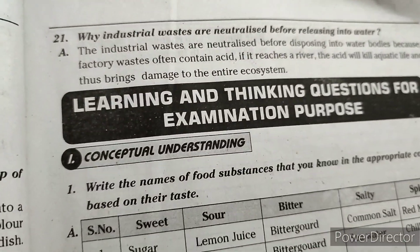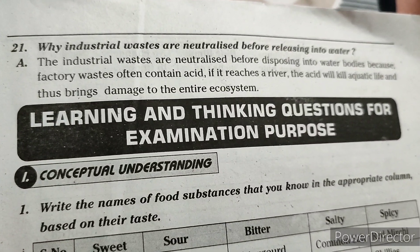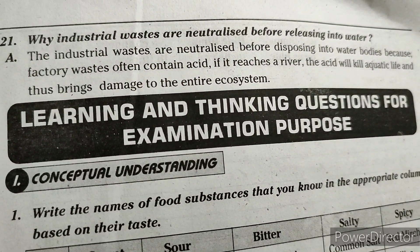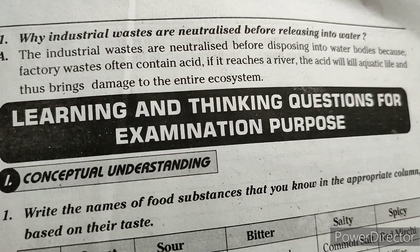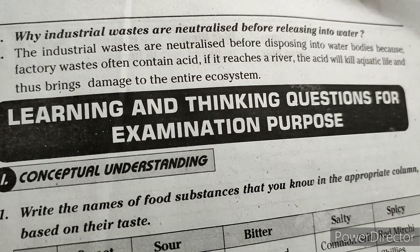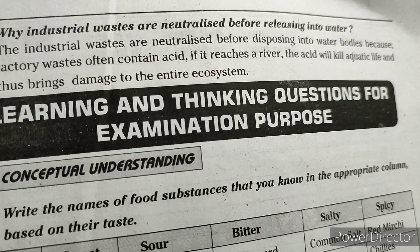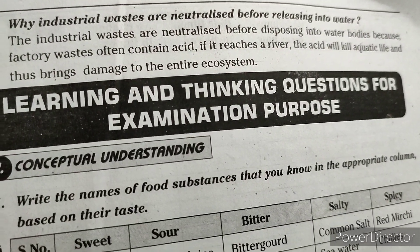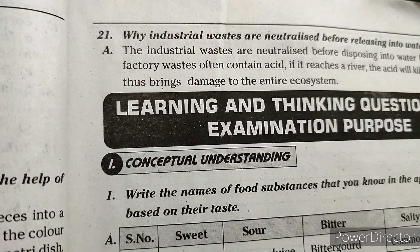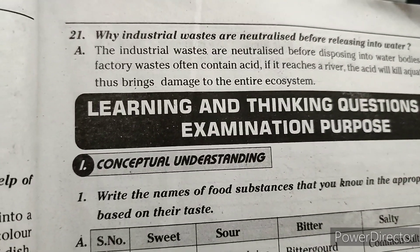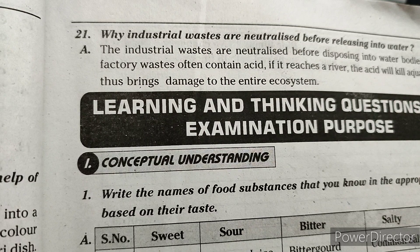21st and last question: why are industrial wastes neutralized before releasing into water? Answer: industrial wastes are neutralized before disposing into water bodies because factory wastes often contain acid. If it reaches a river, the acid will kill aquatic life and thus bring damage to the entire ecosystem. By this we complete this lesson's question answers. In the next video we will be seeing the next part. Bye kids, have a nice day.